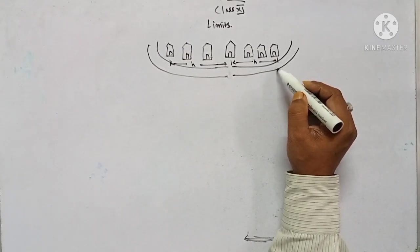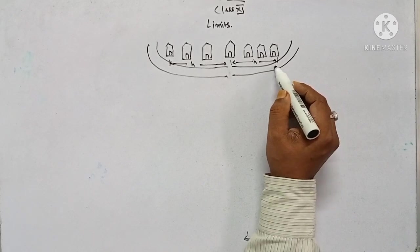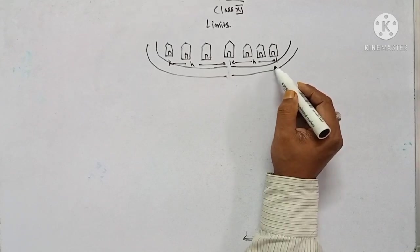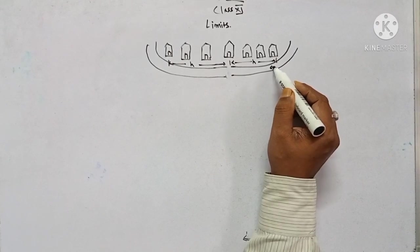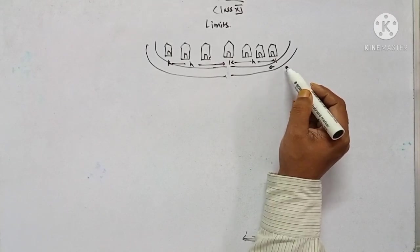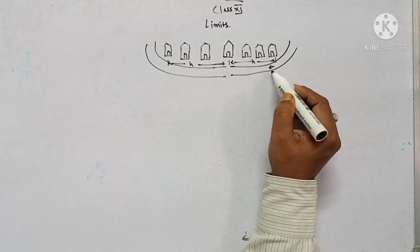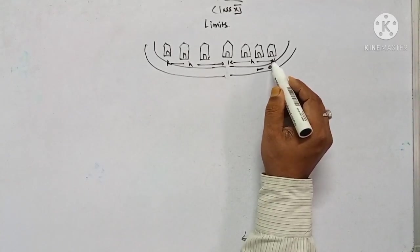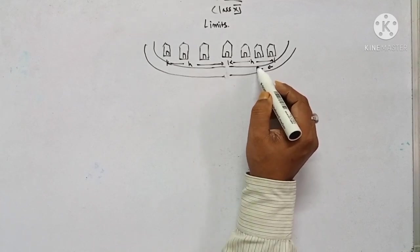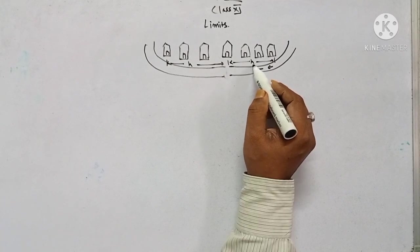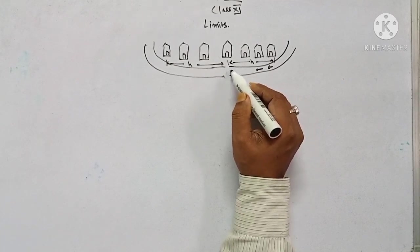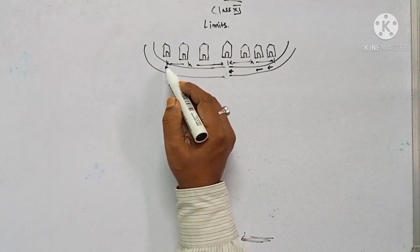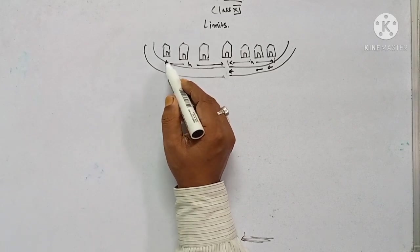From the third house towards the right, I am proceeding to your house — slowly moving. As I move forward from the right side, the distance H reduces, and when H is almost zero, I reach your house.